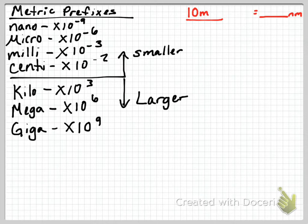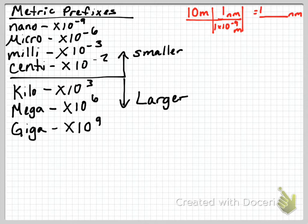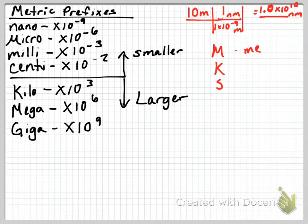Let's try an example. We are going to take 10 meters and see how many nanometers that is. We start with our conversion factor: one nanometer equals 1 times 10 to the negative ninth meters. That allows the meters to cancel, and by doing the math we get 1.0 times 10 to the 10th. So by dividing 10 meters by 1 times 10 to the negative 9th meters, we get 1.0 times 10 to the 10th nanometers.